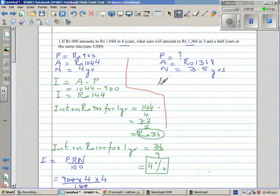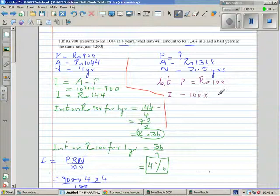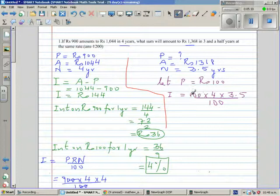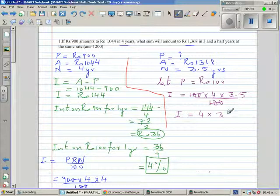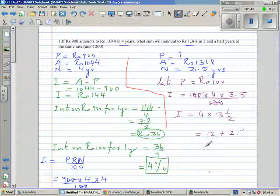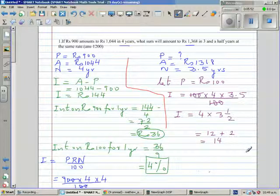So suppose let P be equal to Rs.100. So interest would be 100 times R is 4 times number of years is 3.5 divided by 100. So 4 times, the 100s cancel. So interest is 4 times 3.5. I don't want to use a calculator as far as possible. So this is 4 times 3 is 12 plus 4 times half is 2. So interest is 14 rupees.